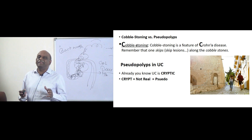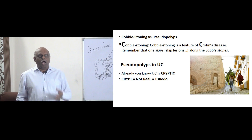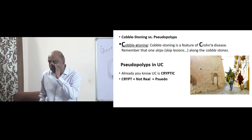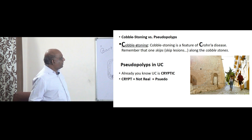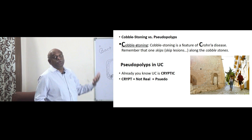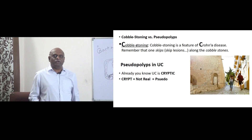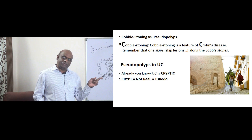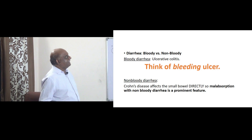Pseudopolyps are there in ulcerative colitis. How will you remember this? Already you know ulcerative colitis has no real abscesses — cryptic abscesses. Cryptic means it is not real, it is secret. Crypt is not real, and not real means pseudo. So pseudopolyps are there in ulcerative colitis, crypt abscesses are there in ulcerative colitis, skip lesions and cobblestoning are features of Crohn's disease — is what you can remember.